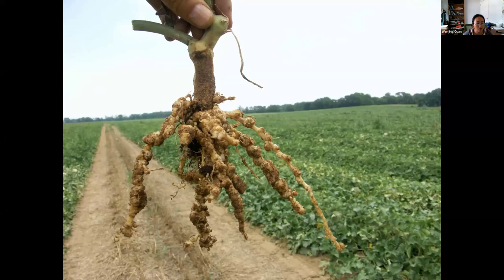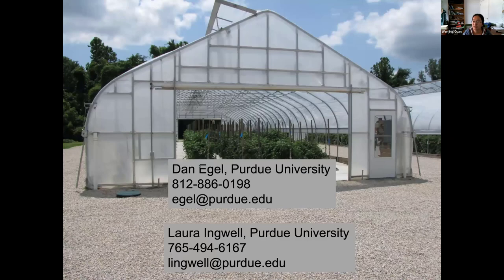Based on these survey results, future extension programs will be developed to address root-knot nematode. There are also plans for field surveys in Indiana to better understand the severity of the issue. Growers interested in finding out whether root-knot nematode is present on their farm are encouraged to contact the presenter — Wenjing Guan, Horticulture Specialist — or Dr. Dan Egel. Contact information will be left in the chat.